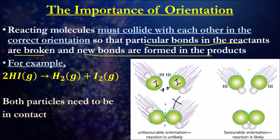Now let's look at the other scenario where the hydrogens are both facing each other - hydrogen here, hydrogen here, iodine here. You can see how the hydrogens and iodines are facing the correct orientation where, when they collide, they can break the bond between the iodines and form a bond with the other hydrogen. So this is the importance of orientation in the context of chemical reactions.